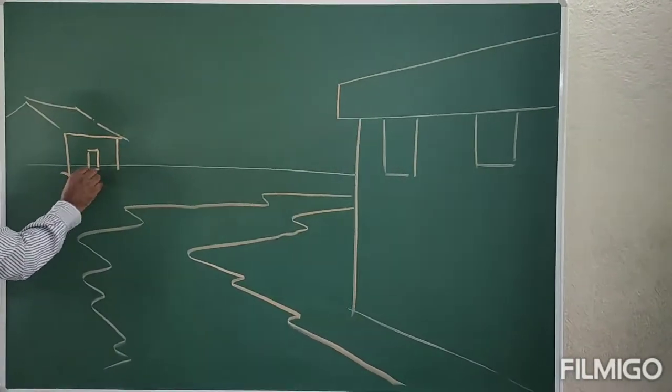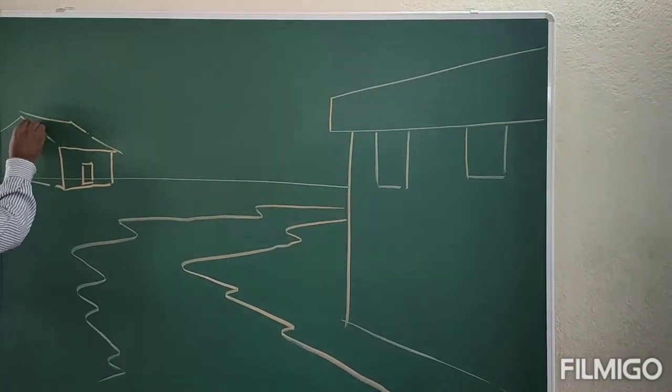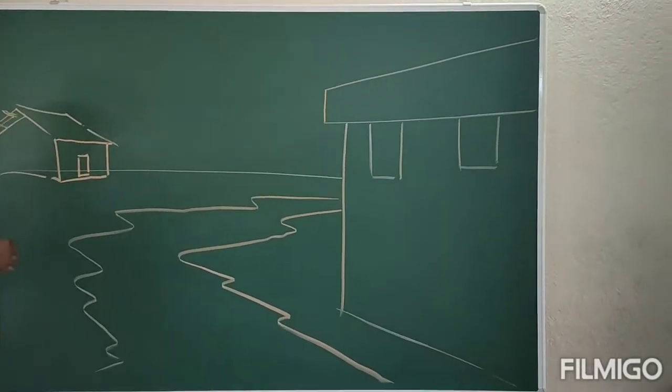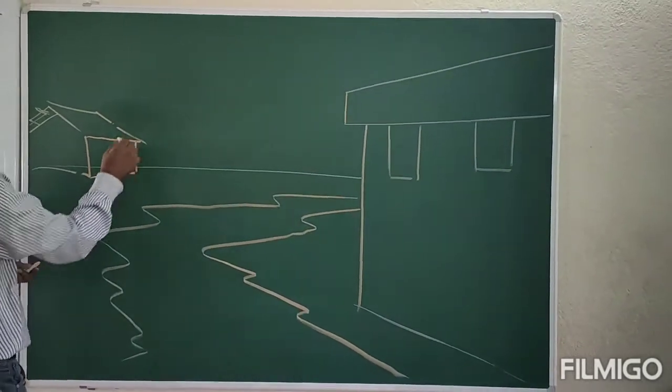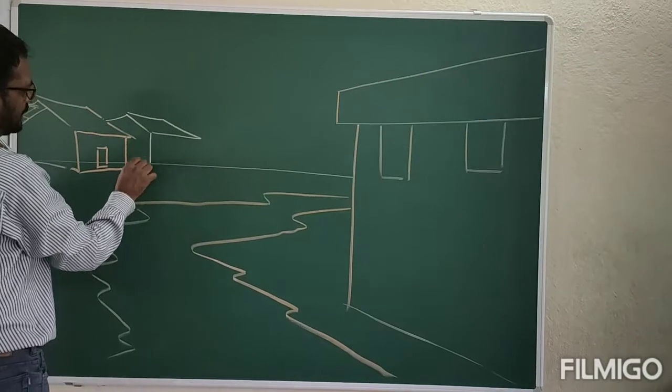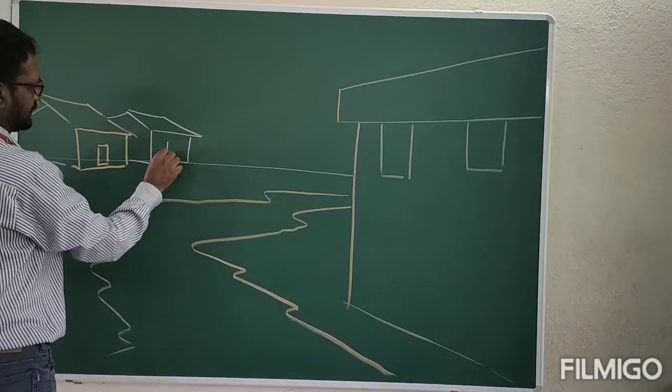And as I am always telling you, the distant things are appearing in the smaller size. To maintain the same, the back side house will be very small in respect to the near one.